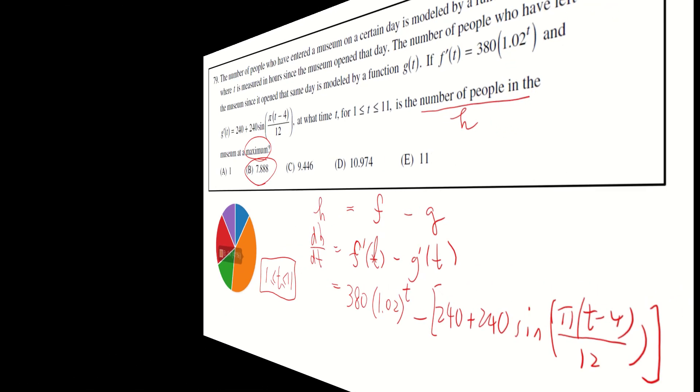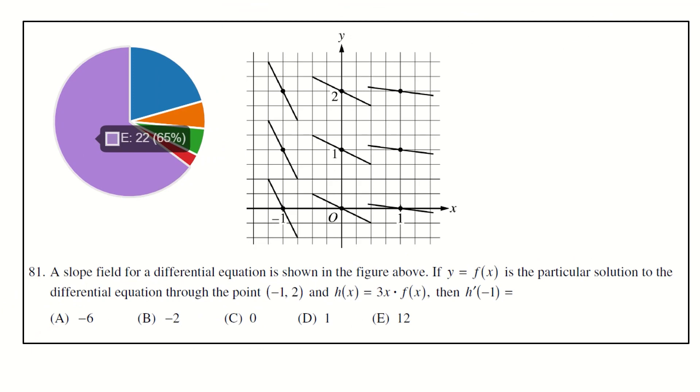Next question 81. A slope field for a differential equation is shown in the figure above. If y equals f(x) is a particular solution through the point negative one, two, and h(x) equals 3x times f(x), what is h prime negative one? h prime x equals 3x f prime x plus 3 f(x) using the product rule. h prime negative one is therefore 3 times negative 1 times f prime negative one plus 3 f negative one.